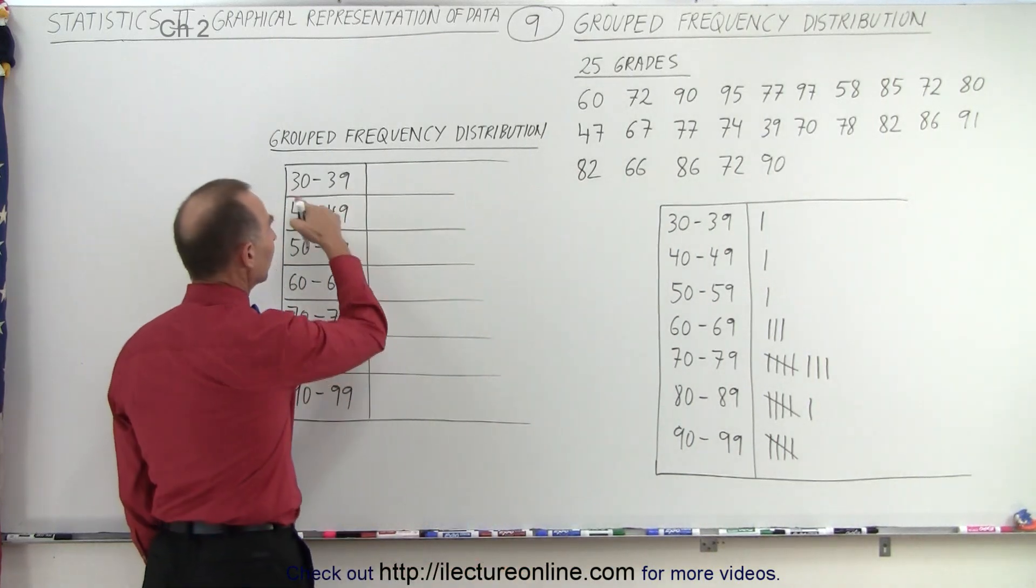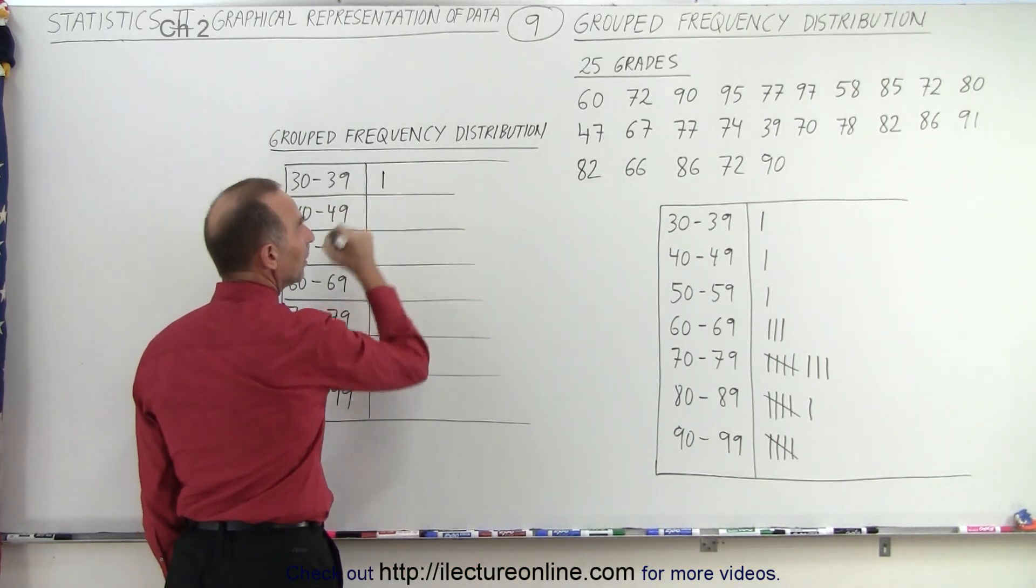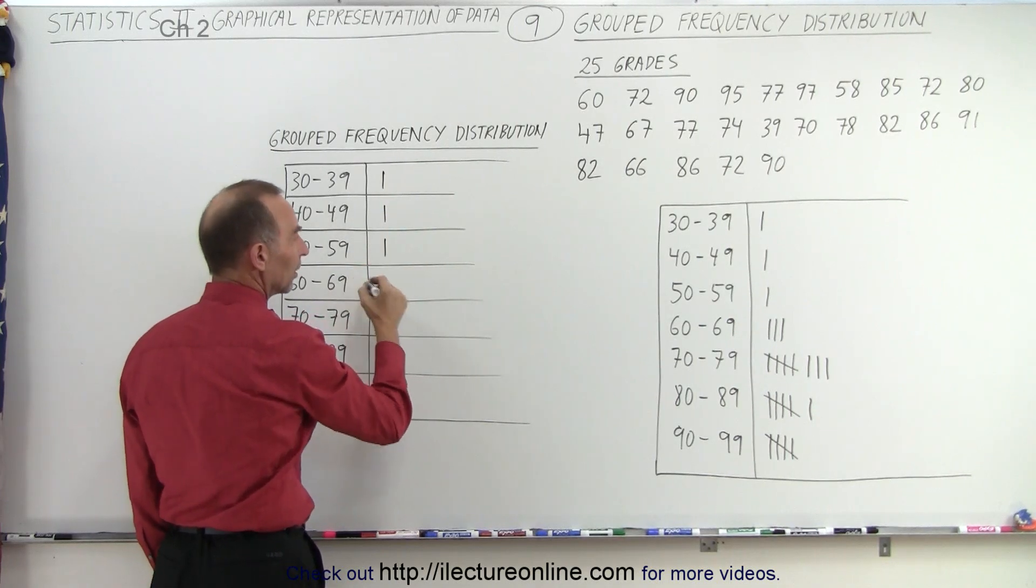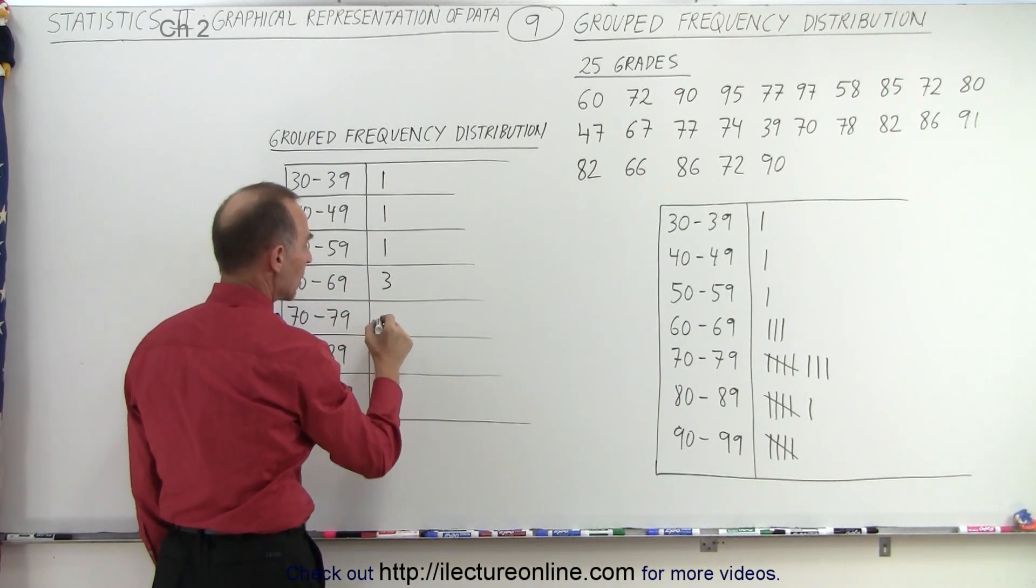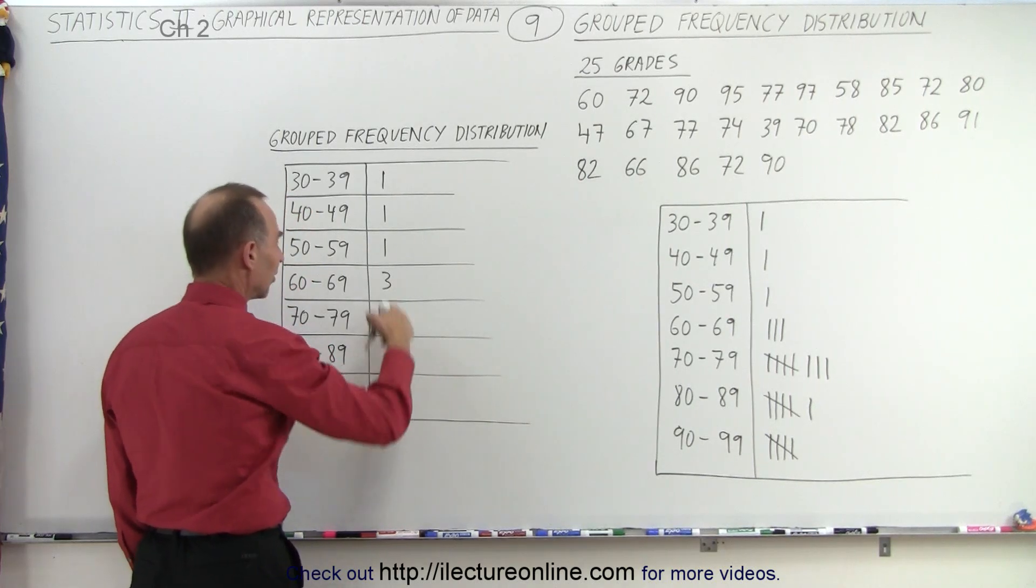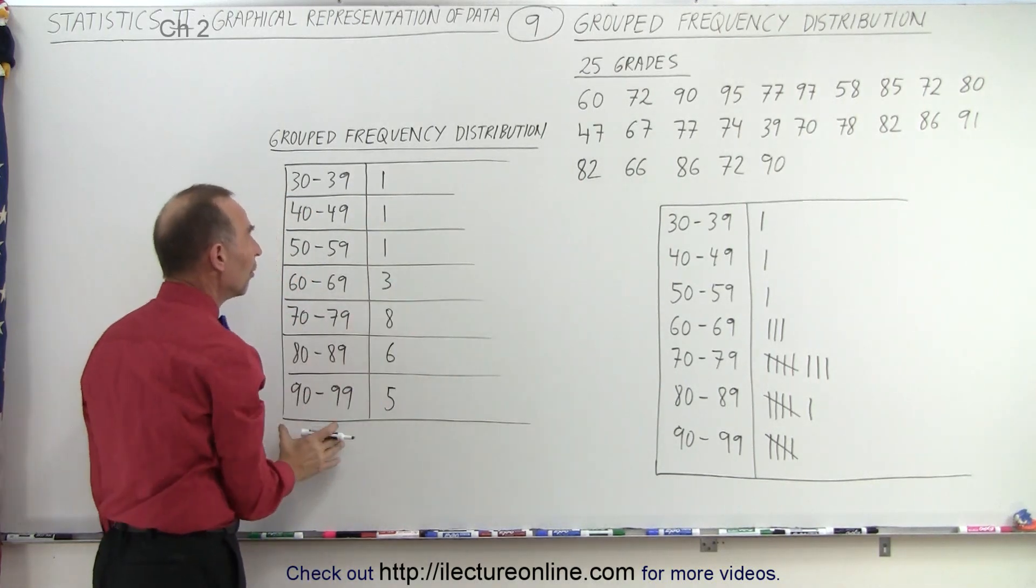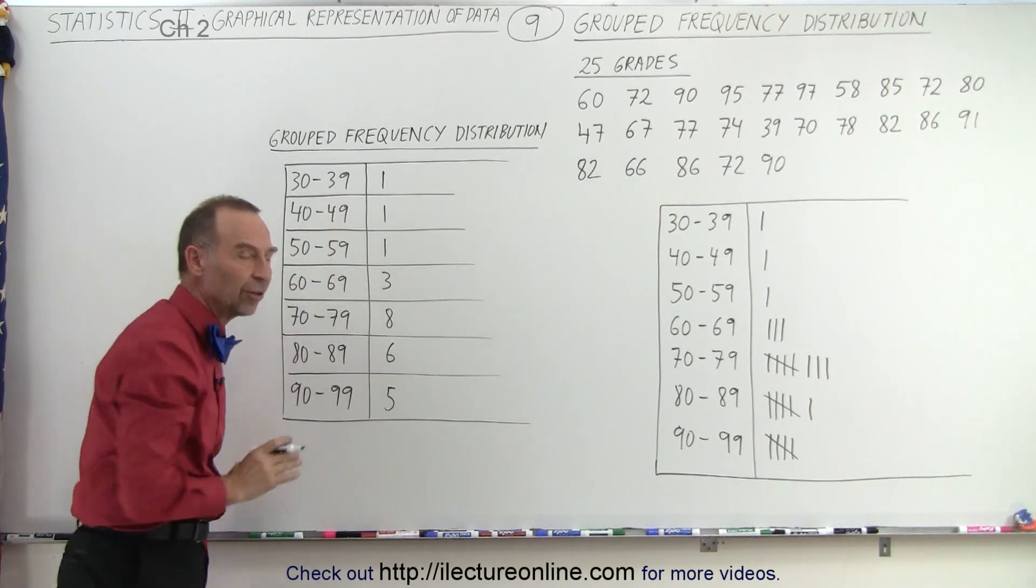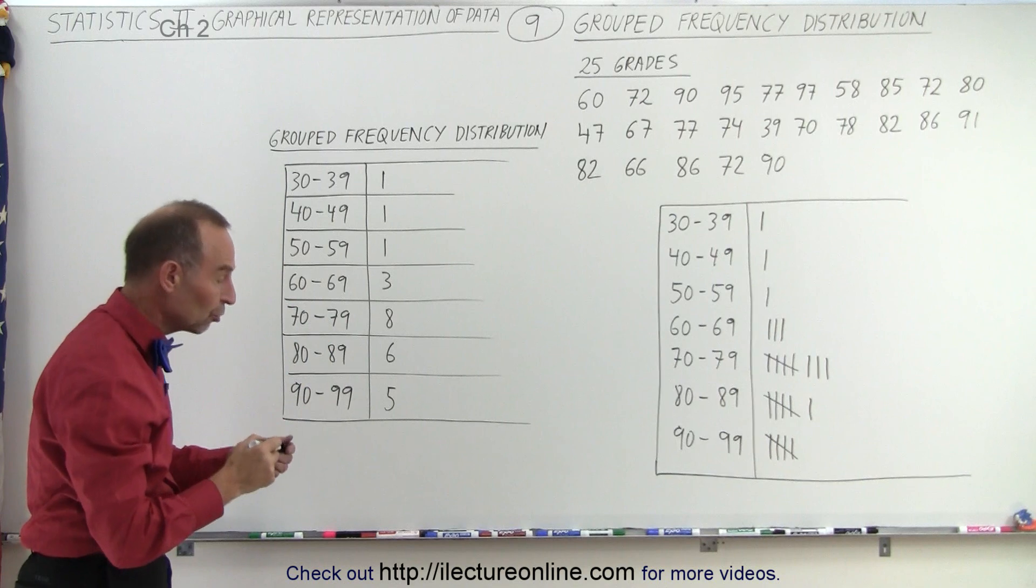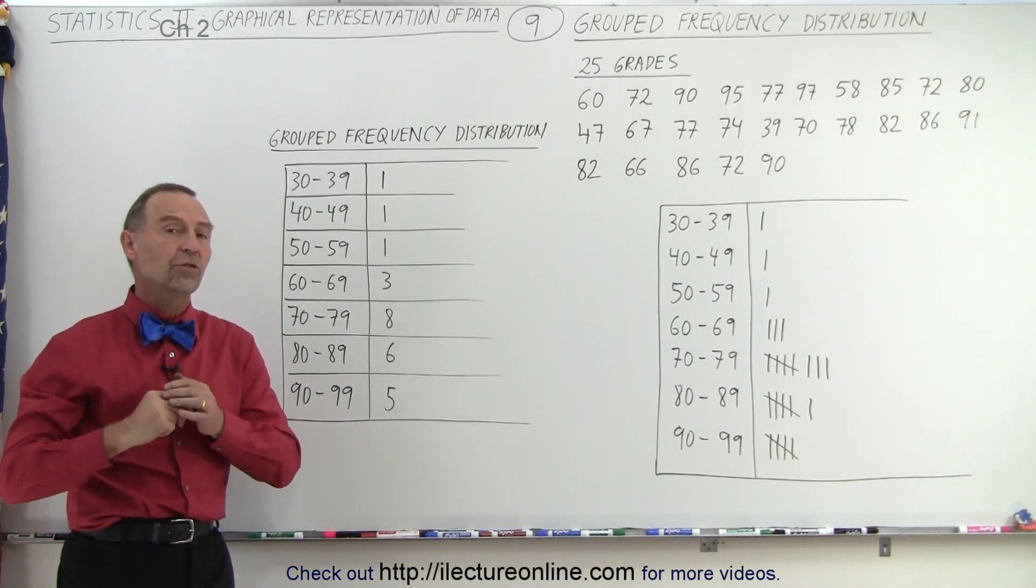So now notice, our frequency for this group is 1, for this group is 1, for that group 1, for the next group 3, here we have 8, there we have 6, and there we have 5. So you can see a frequency distribution for these grouped sets of data, and that's the difference between grouped frequency distribution and non-grouped frequency distribution.